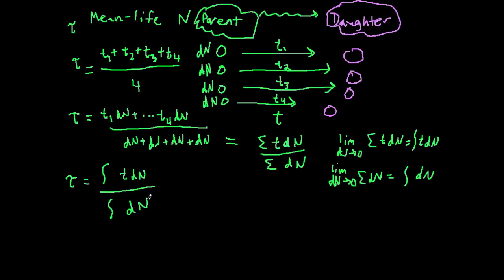Let's think about what the limits of this integral would be. At time equals zero, we start with our starting amount, which we call n of zero. We're looking at the time until we have none left — zero atoms left. So we integrate from n of zero down to zero on both the top and bottom integrals.